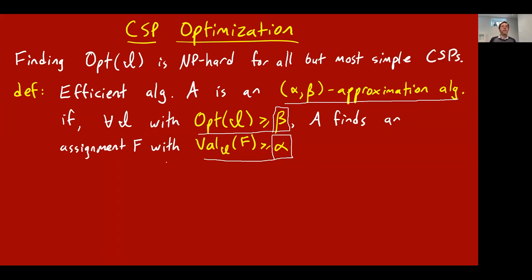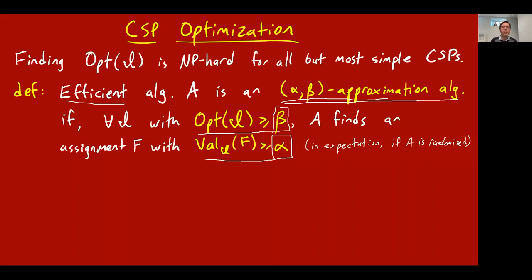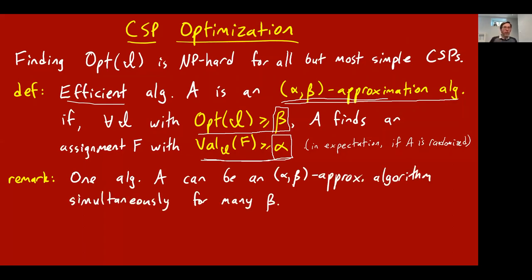Getting back to CSP optimization: I've built polynomial-time efficiency into the definition so I can stop saying 'efficient approximation algorithm' each time. I'll just assume when I say approximation algorithm, it means a polynomial-time one. I'm also going to allow randomized algorithms, in which case the guarantee should be that it finds an assignment of value at least alpha in expectation. One algorithm A can simultaneously be an alpha-beta approximation algorithm for many betas.